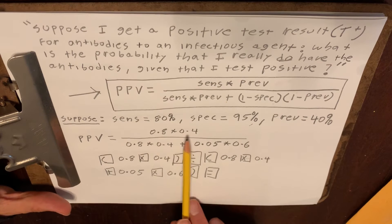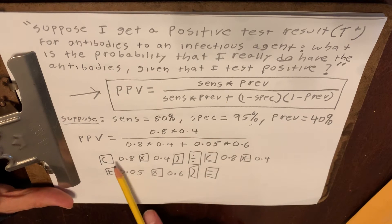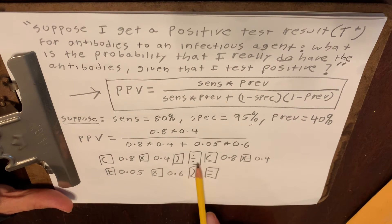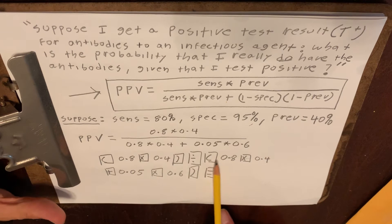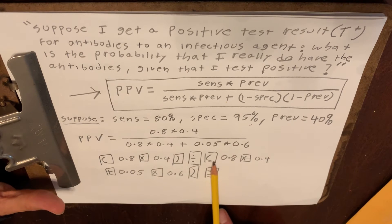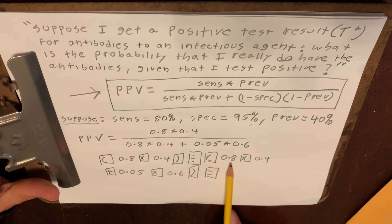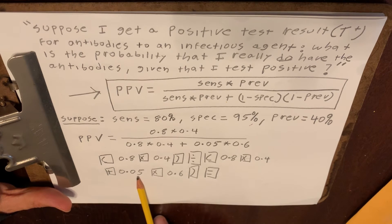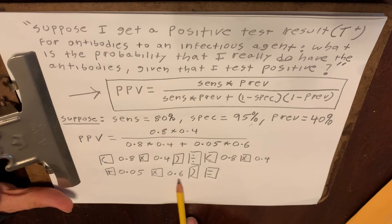So let's make sure we have it: 0.8 times 0.4, divided by — in parenthesis, the whole denominator — 0.8 times 0.4 plus 0.05 times 0.6.